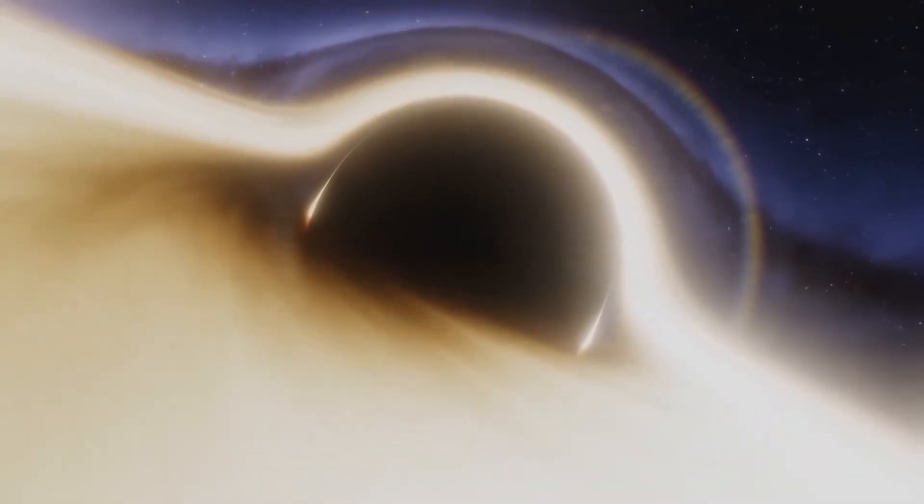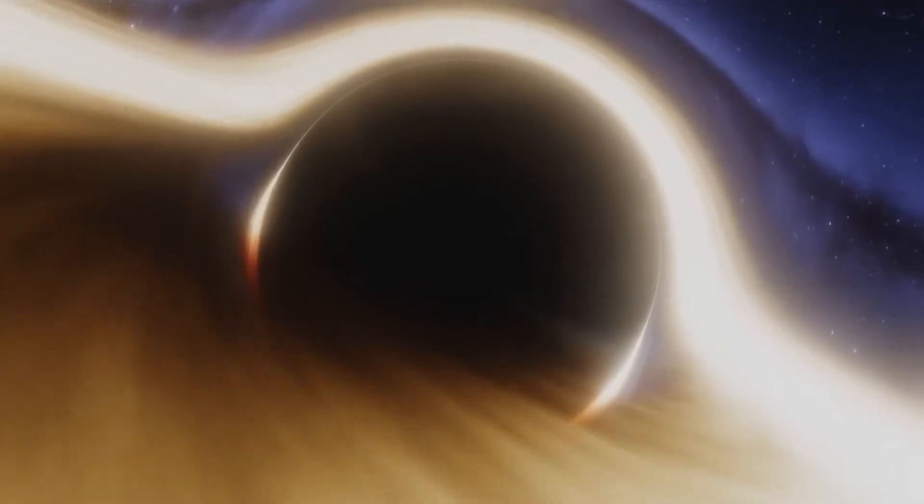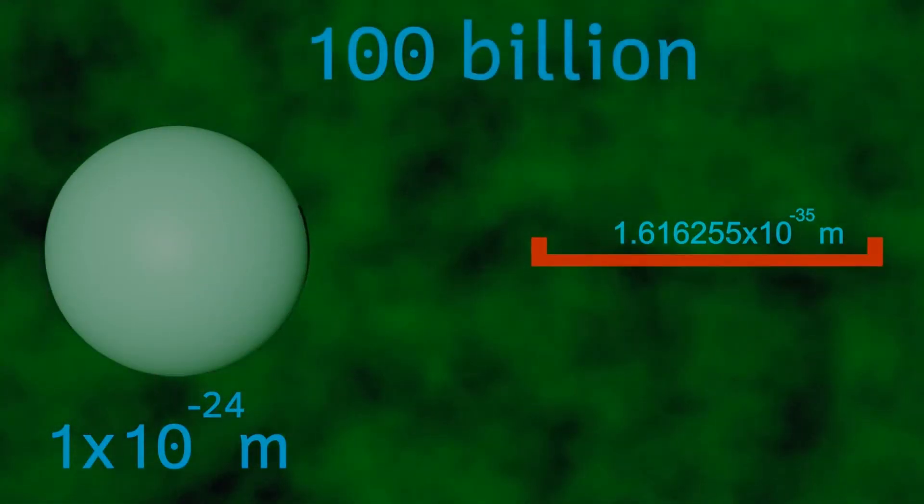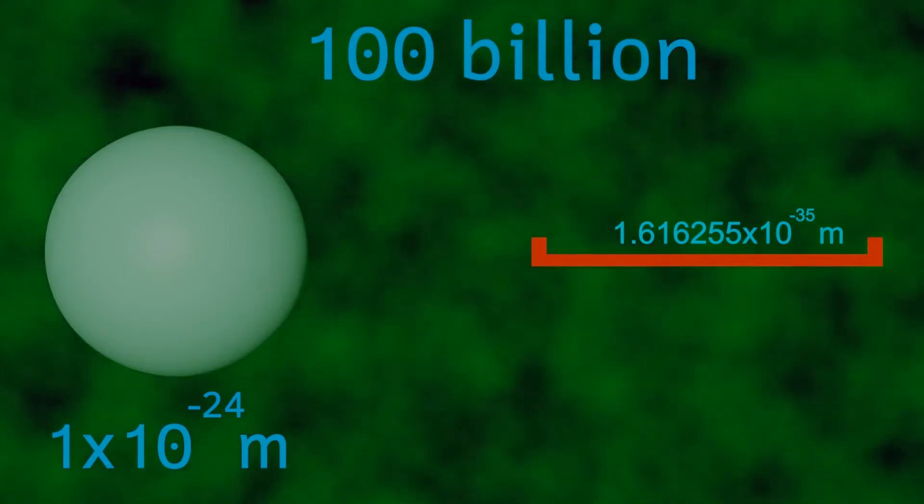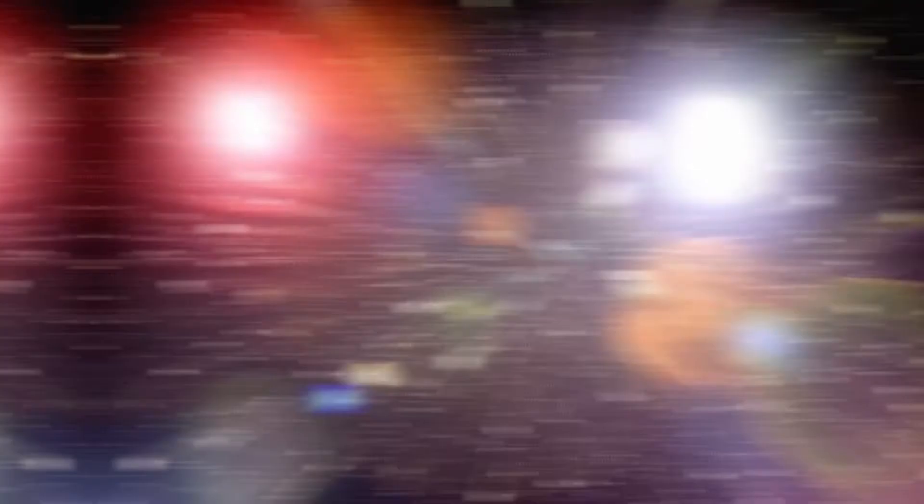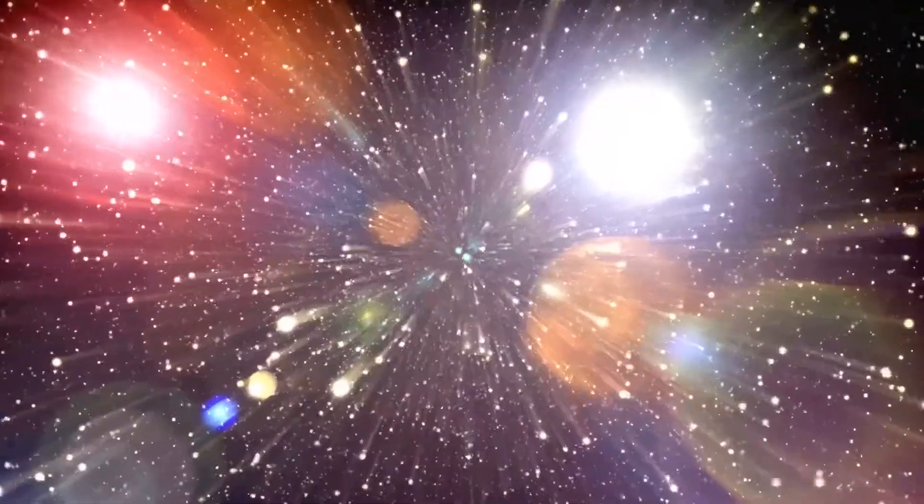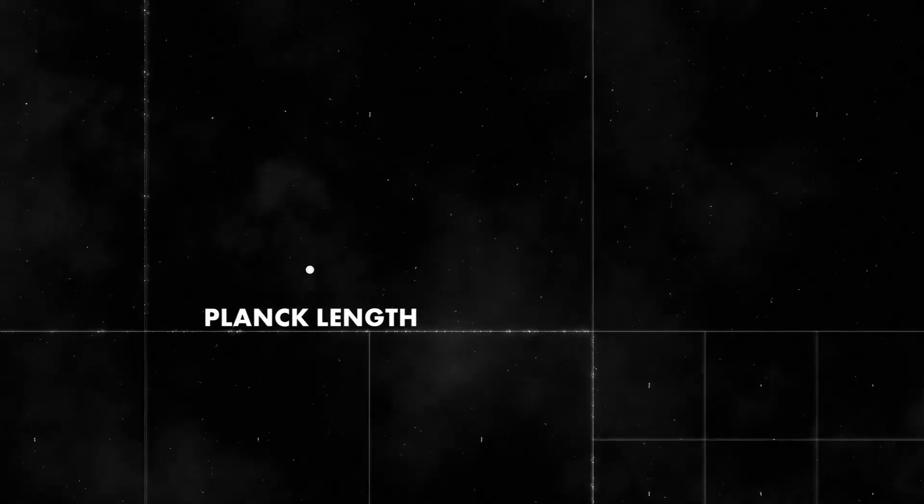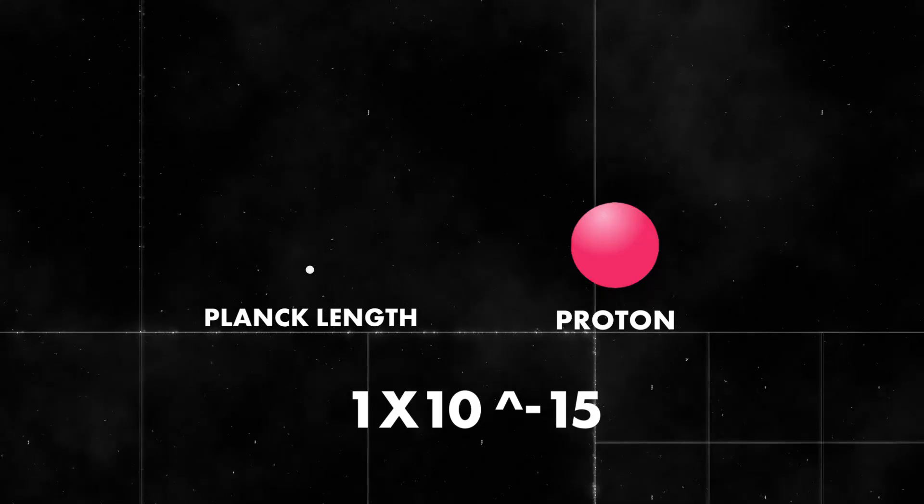The Planck length refers to the scale at which classical theories like gravity and spacetime no longer hold and quantum mechanics takes over. One Planck length is tiny, roughly 1.6 times 10 to the negative 35 meters, nearly 20 orders of magnitude, 100 million trillion times smaller than the diameter of a proton.